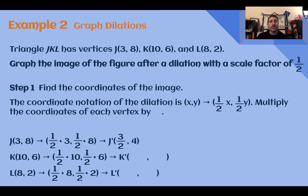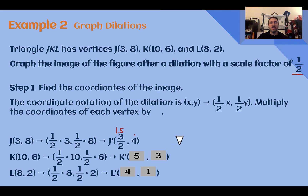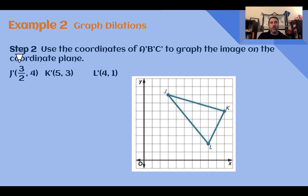Example 2 — Graph Dilations. Triangle JKL has vertices (3, 8), (10, 6), and (8, 2). Graph the image after a dilation with a scale factor of one half. Since the scale factor is between 0 and 1, the image will be smaller than the pre-image. Multiplying each coordinate by 1/2: (3, 8) becomes (1.5, 4); (10, 6) becomes (5, 3); and (8, 2) becomes (4, 1). All new coordinates are just half of the originals.